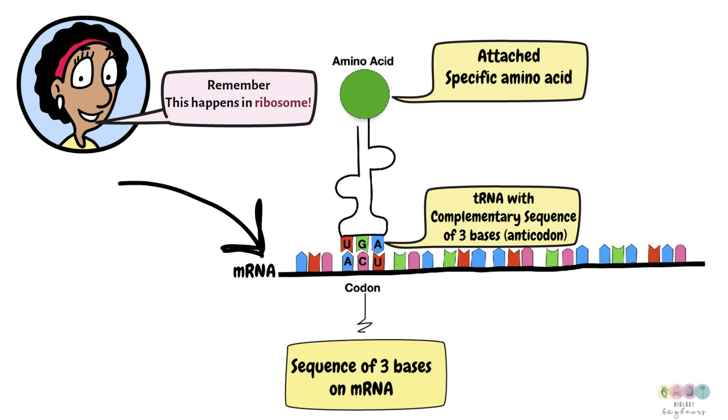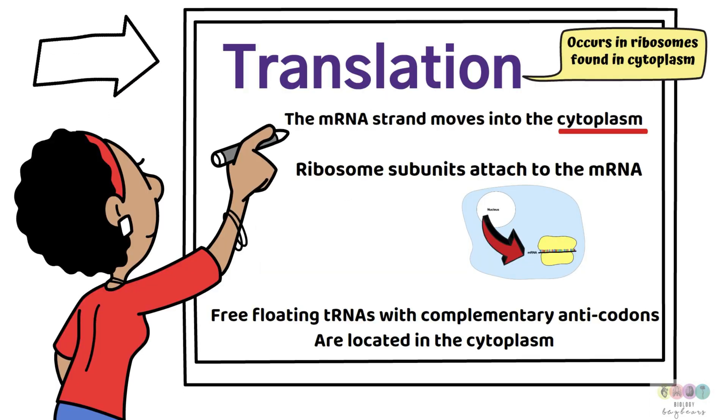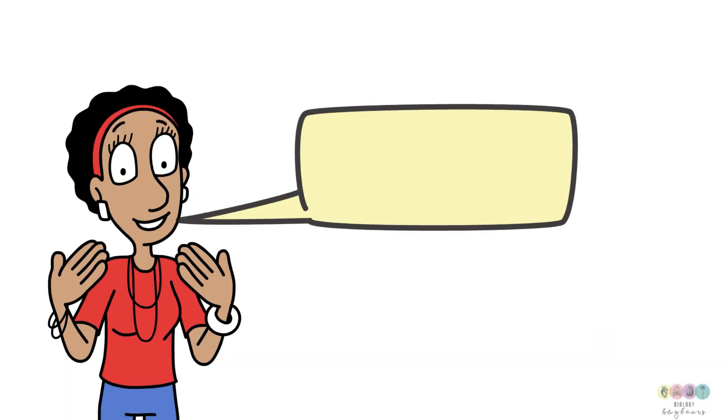And this is all happening in the ribosome. So this is the translation part of protein synthesis where the code or the message on messenger RNA gets translated and a protein is formed. So how does this happen?